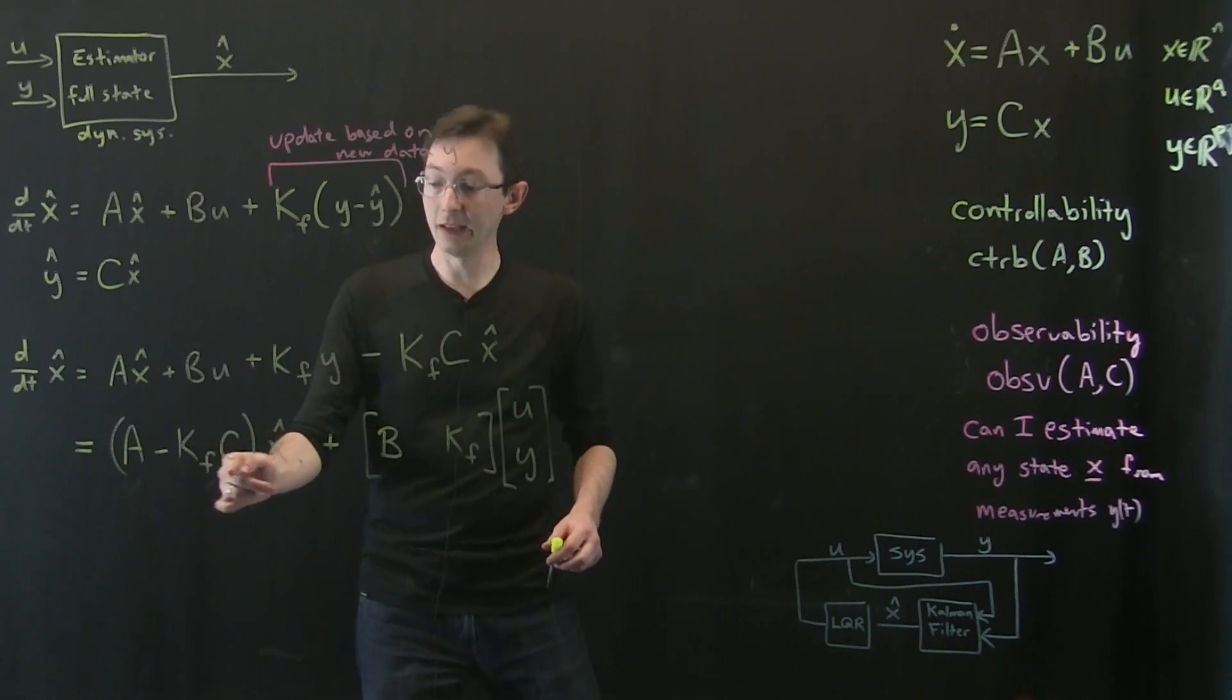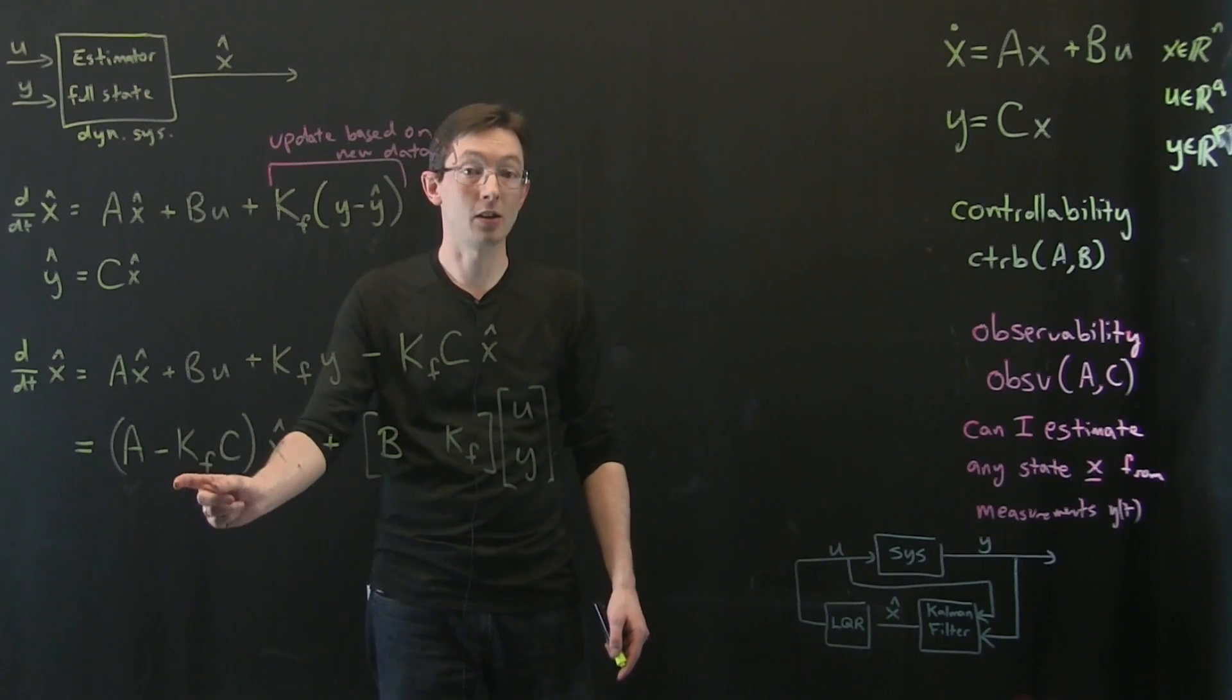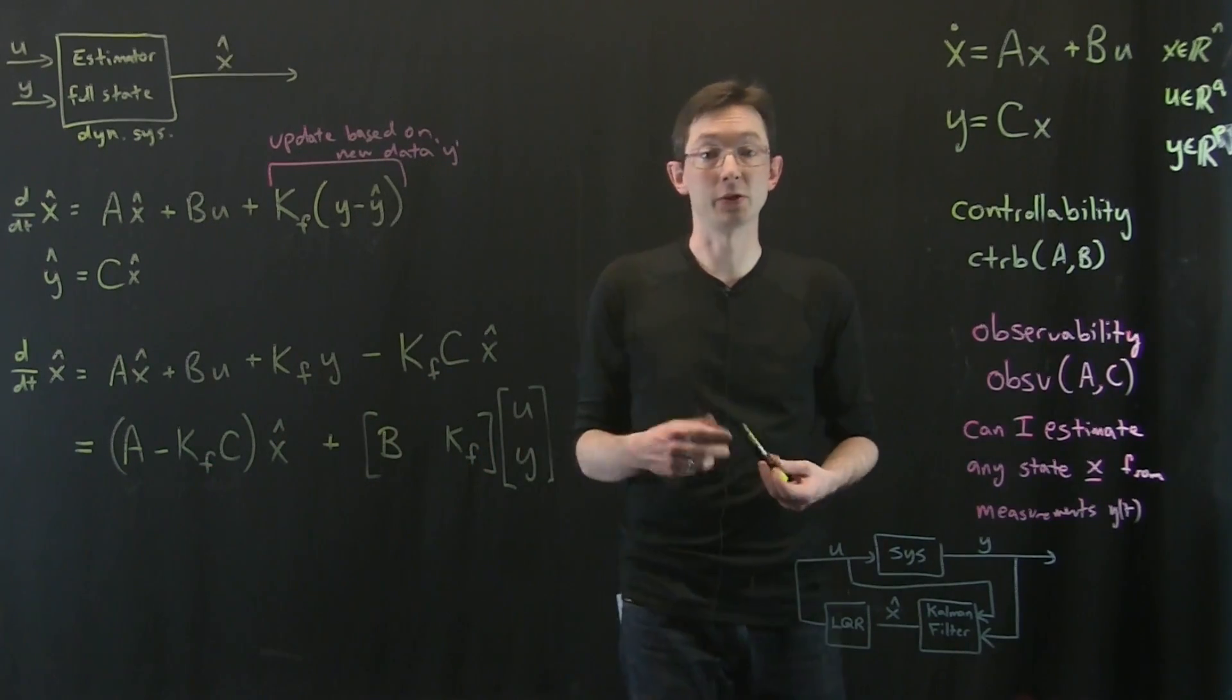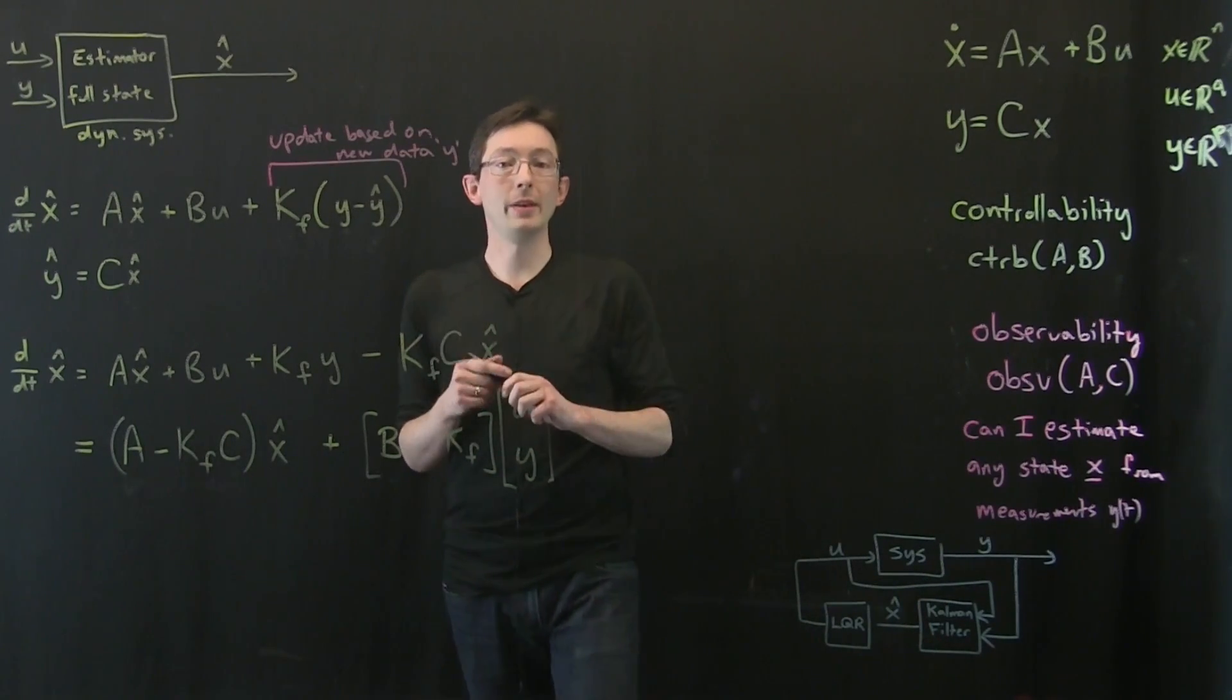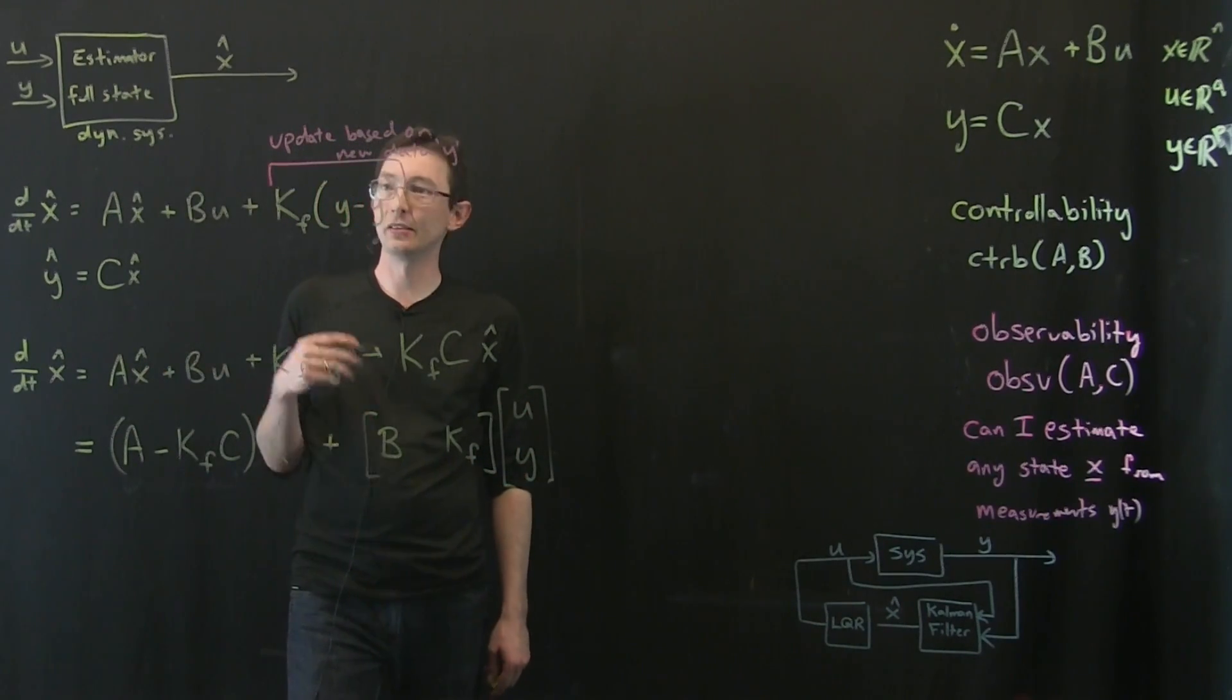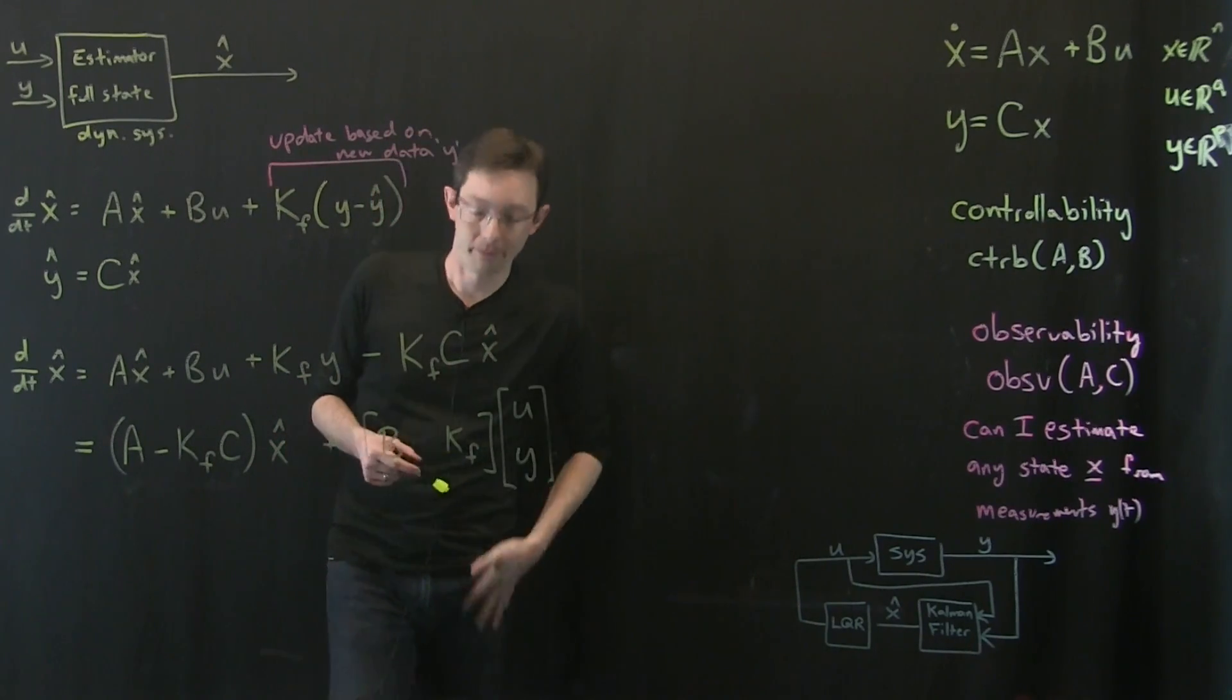And this should start looking a lot like the LQR full state feedback problem. If A and C are observable now, then with an appropriate choice of K, this Kalman filter gain matrix, I can place the eigenvalues of this anywhere I want and there will be an optimal choice. Let me now show you how you would actually compute the error of this. It's a little bit messy, but I think we can do it.